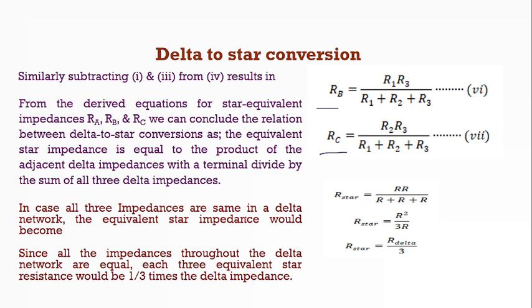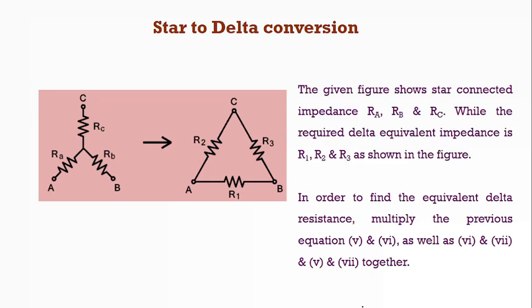So if in a delta network, all the three impedances are of same value, then the equivalent R resistance is going to be one third of the delta resistance.